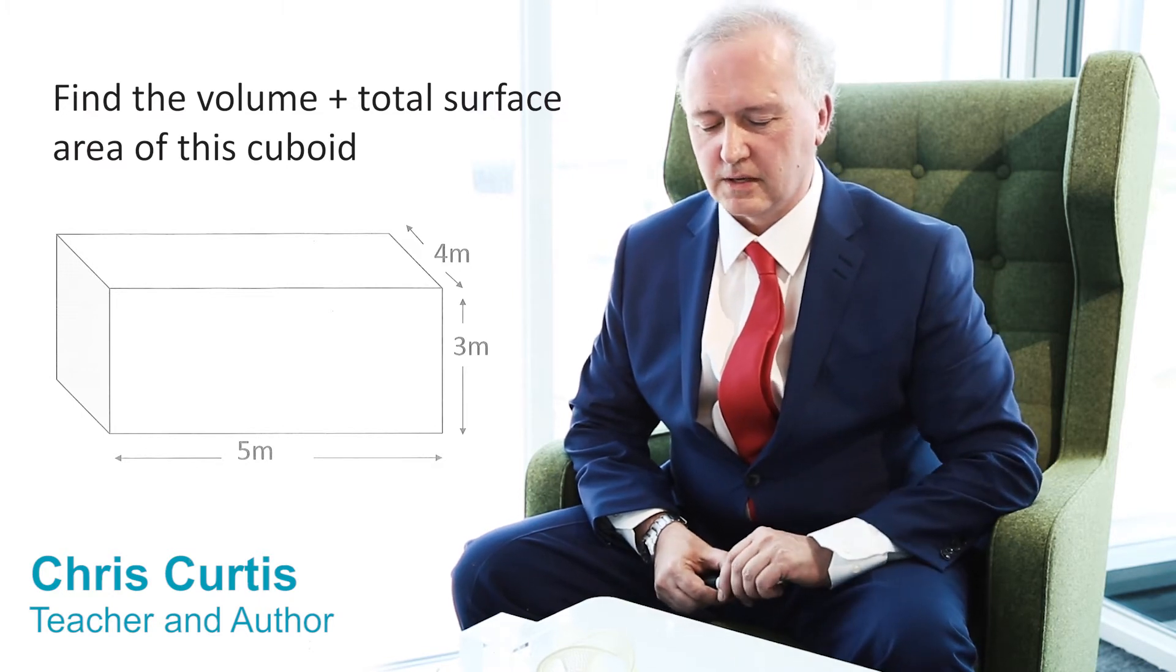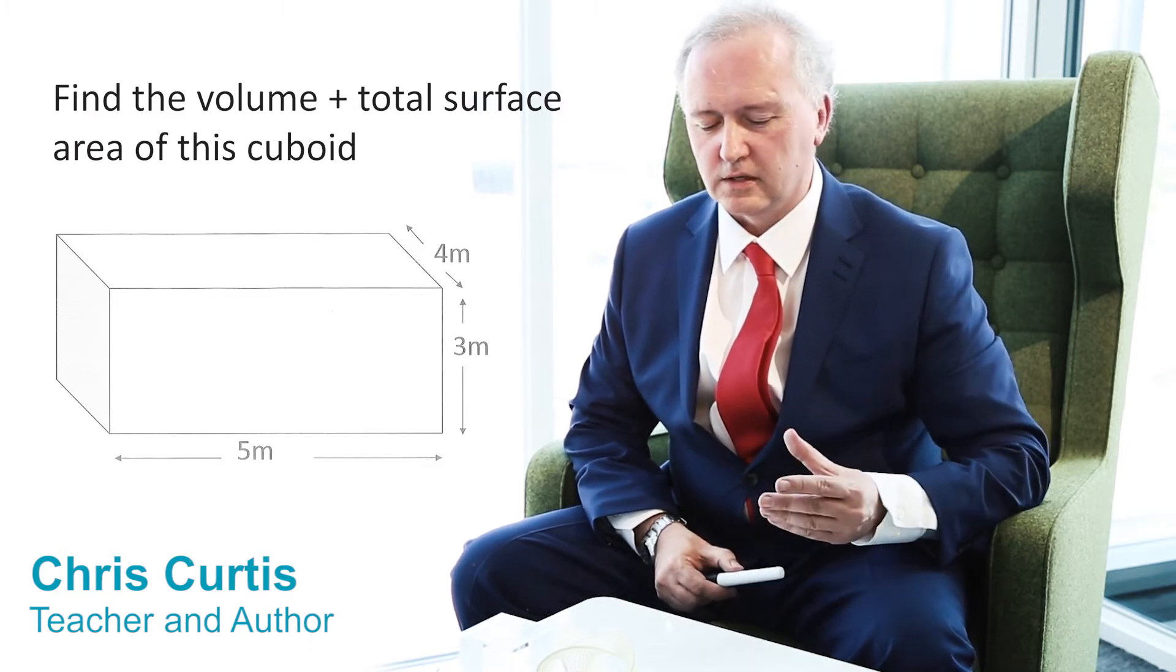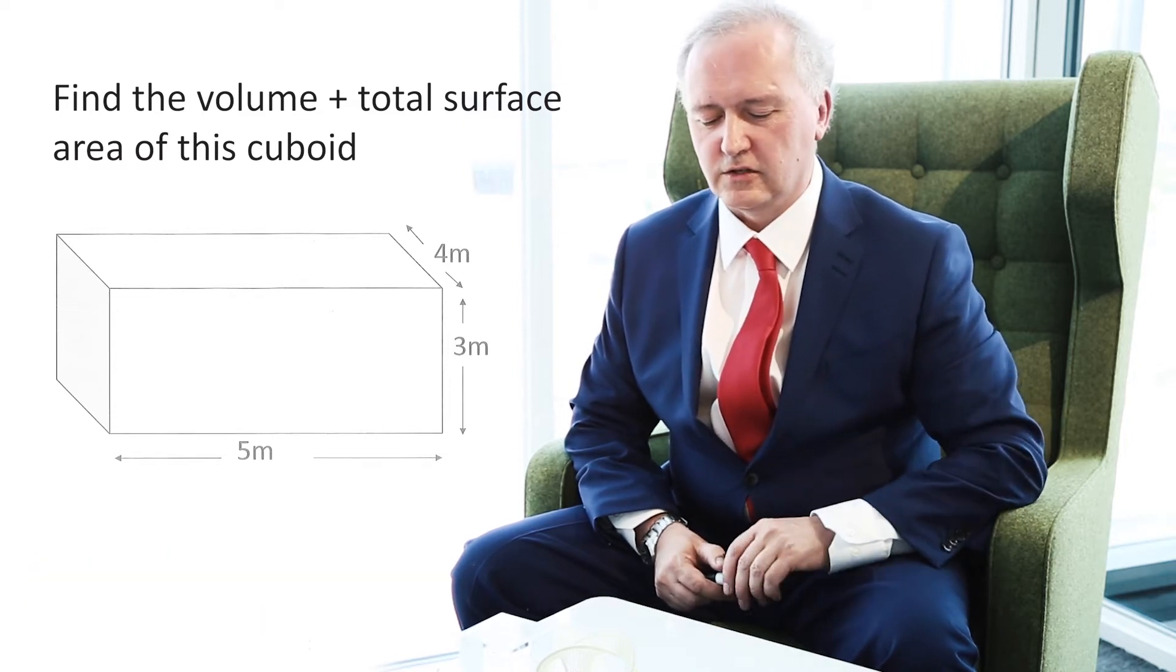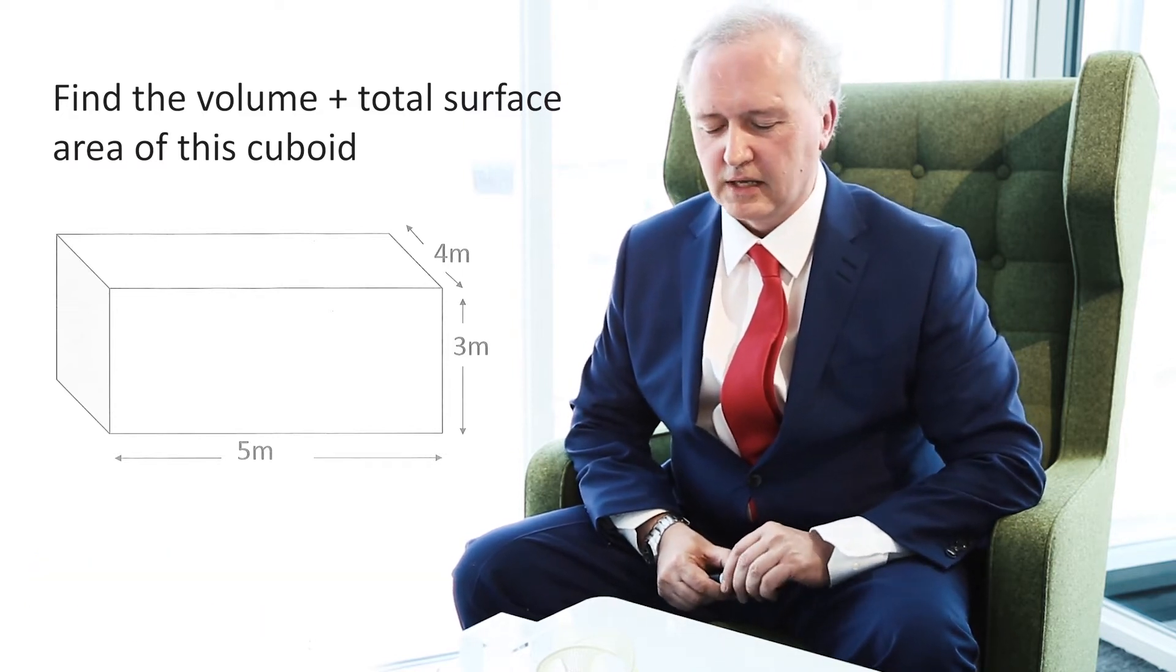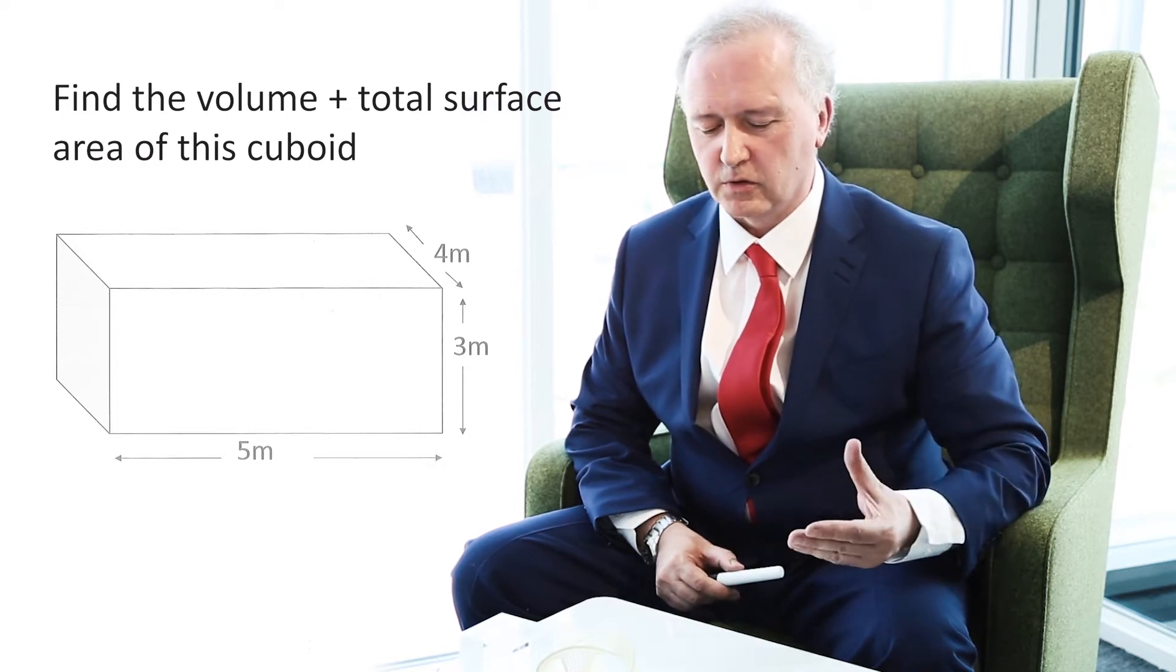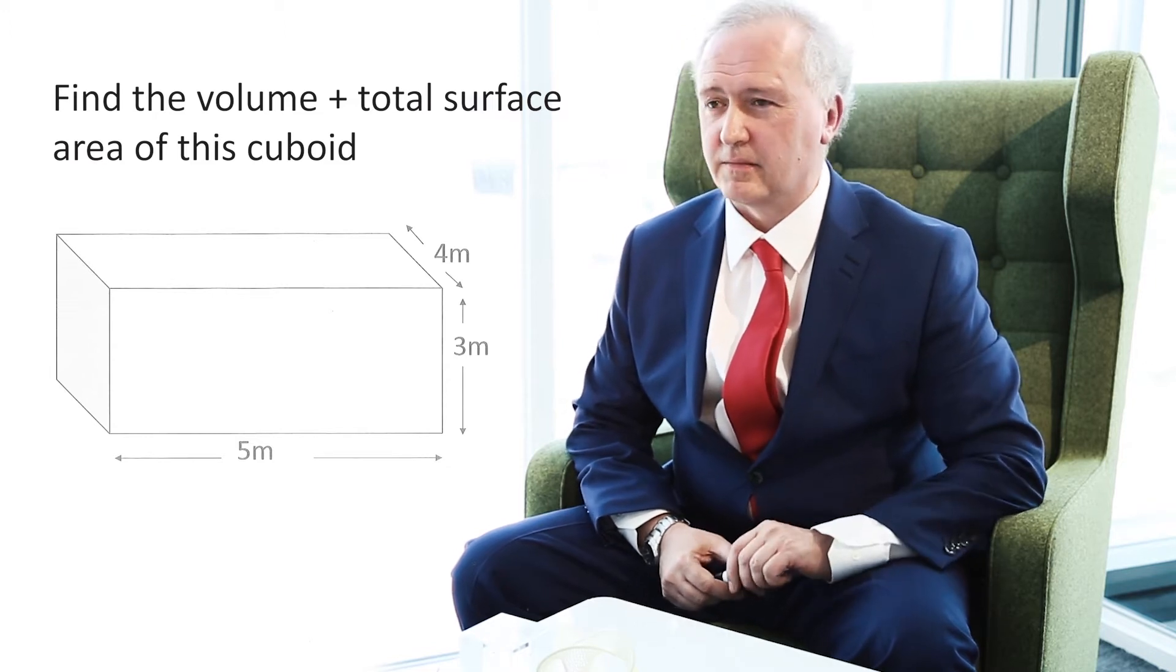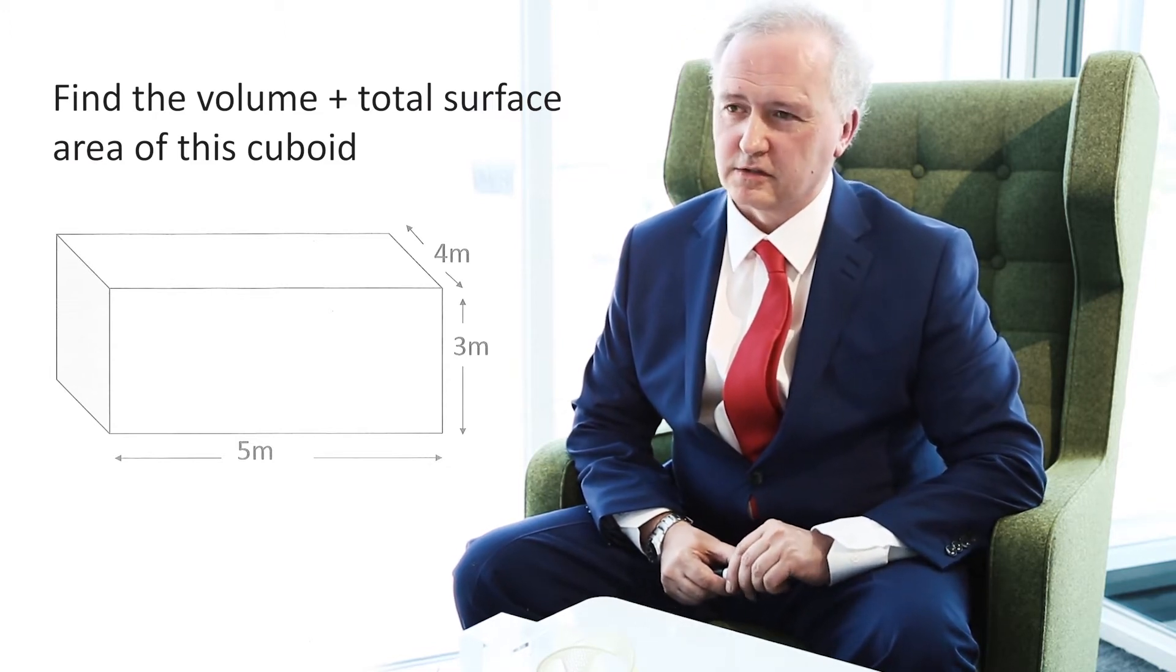Now the volume refers to the amount of substance within a three-dimensional shape and the really good news about finding the volume of a cuboid is it's incredibly straightforward because a cuboid is a prism and in mathematics a prism is any three-dimensional shape that has a constant cross-section.